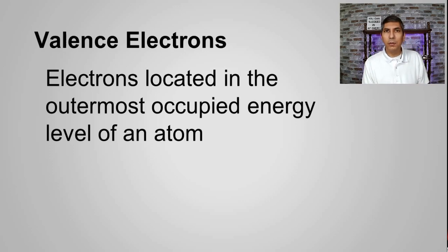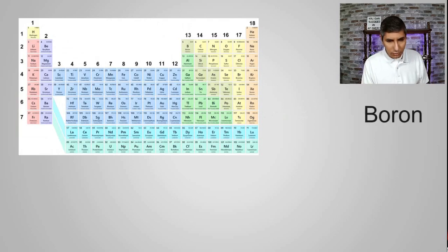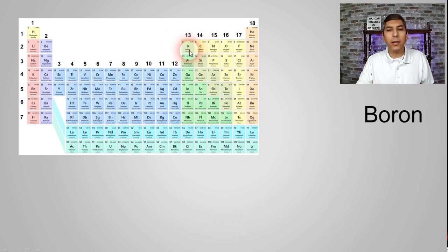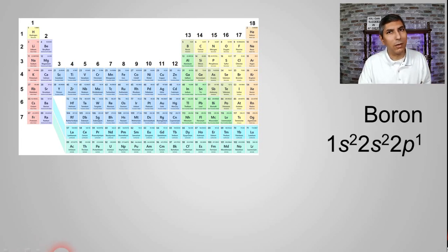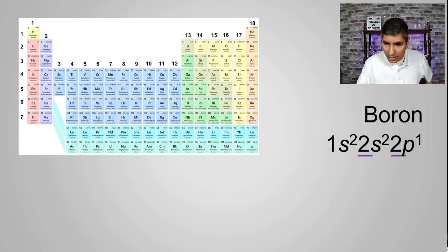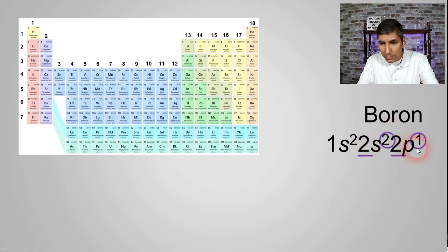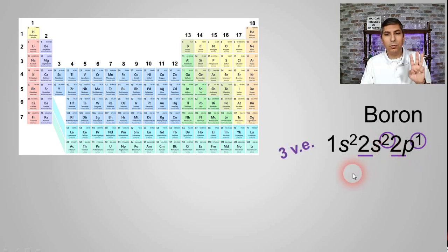We can say that aluminum has three valence electrons. Let's try this for another element — boron. We can see where boron is on the periodic table, and its electron configuration is 1s2, 2s2, 2p1. To count up the valence electrons, we look at the highest coefficient, which represents the outermost electron shell — the second shell in this case — and add the superscripts together. So 2 plus 1 equals 3, meaning boron has three valence electrons.